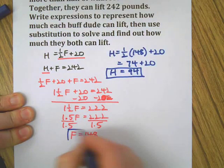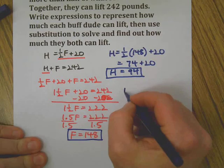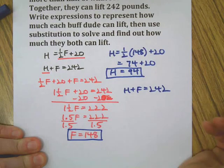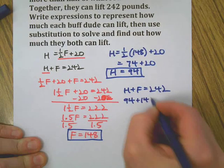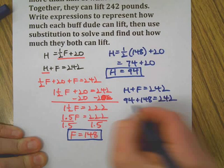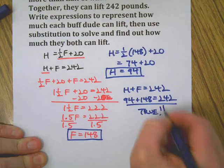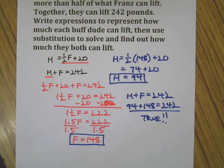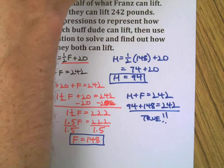Now we're going to find out what Hans can lift. Hans is one-half of 148 pounds plus 20 means 74 plus 20 is 94 for Hans. And let's see if the original problem is now true because the problem said that Hans and Franz together makes 242. Let's test it out. 94 plus 148 equals 242. It's true! And that is how you solve a simple real-world situation with two variables using algebra.